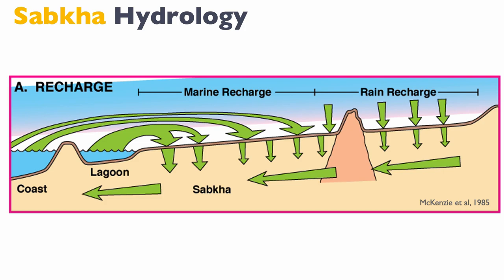Or you can have a coastal sabkha, where the water in the pore space is actually marine water because it is recharged during storms — especially during the winter, where strong winter storms wash seawater over that continental deposit. So those two types of sabkha are different: the continental one has essentially meteoric water, whereas the coastal one has marine waters. Both are recharged in an arid environment, like today in the Middle East, during winter.